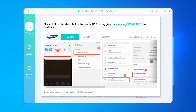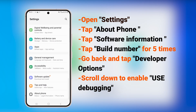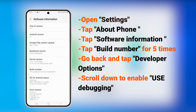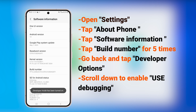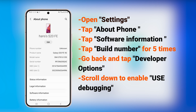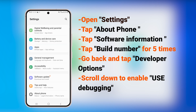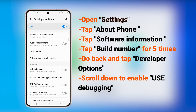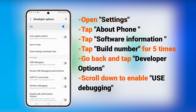If prompted, you'll need to enable USB debugging on your Android phone. If it's not shown on your phone, follow the on-screen guide to open USB debugging on Android. This allows your device to communicate with your computer for advanced operations — all you need to do is open Developer Mode to enable USB debugging.